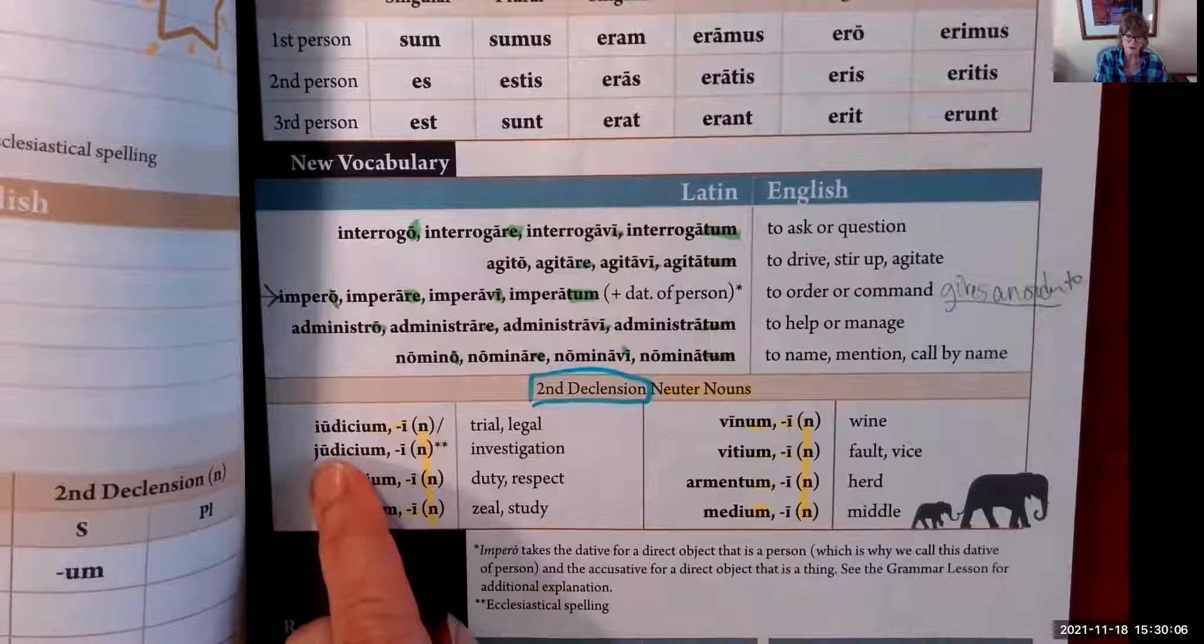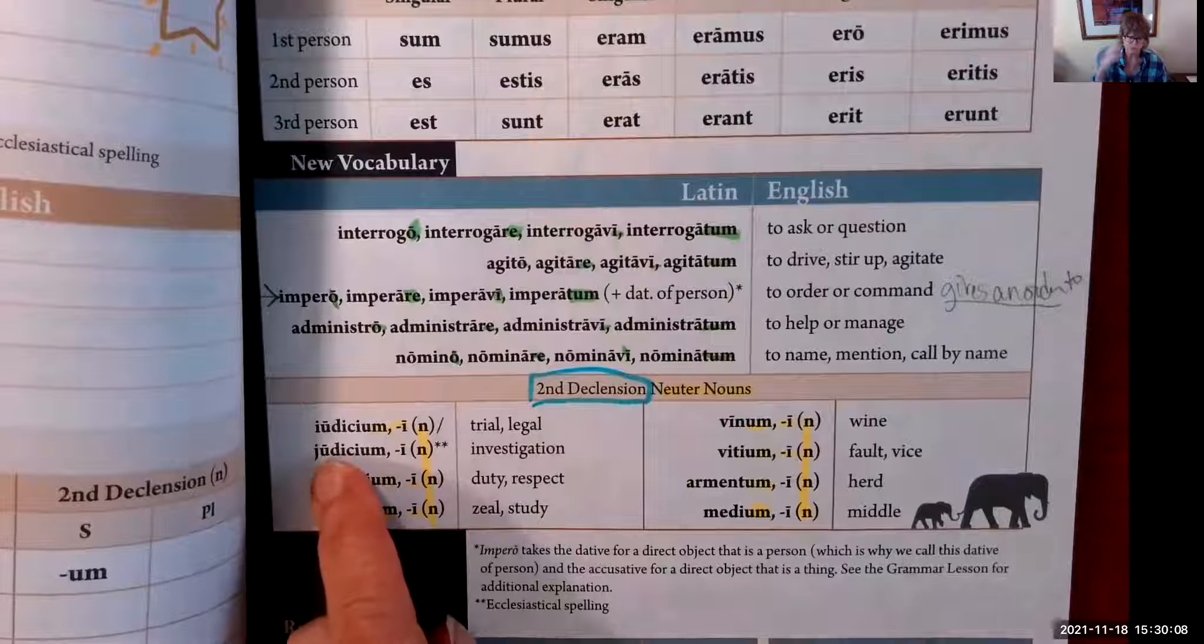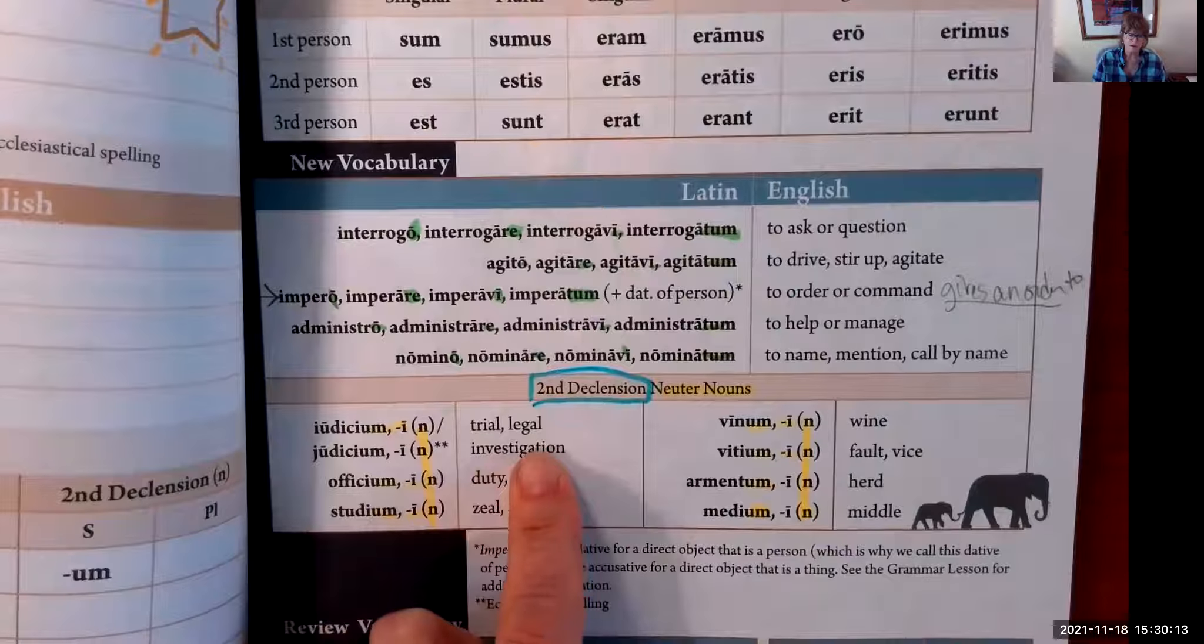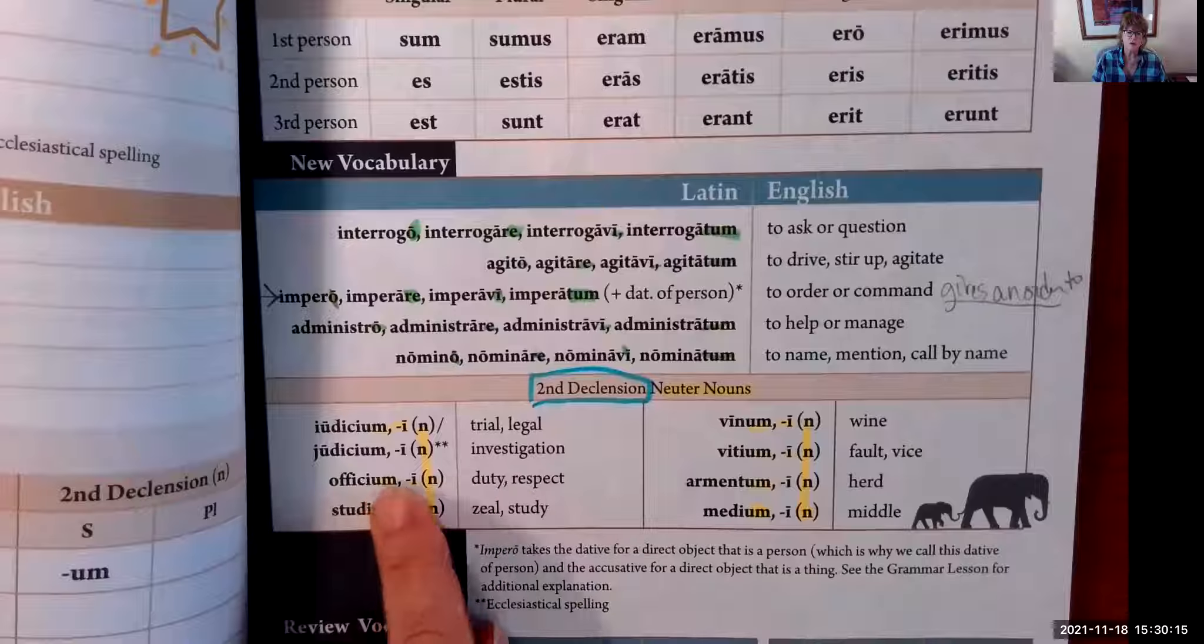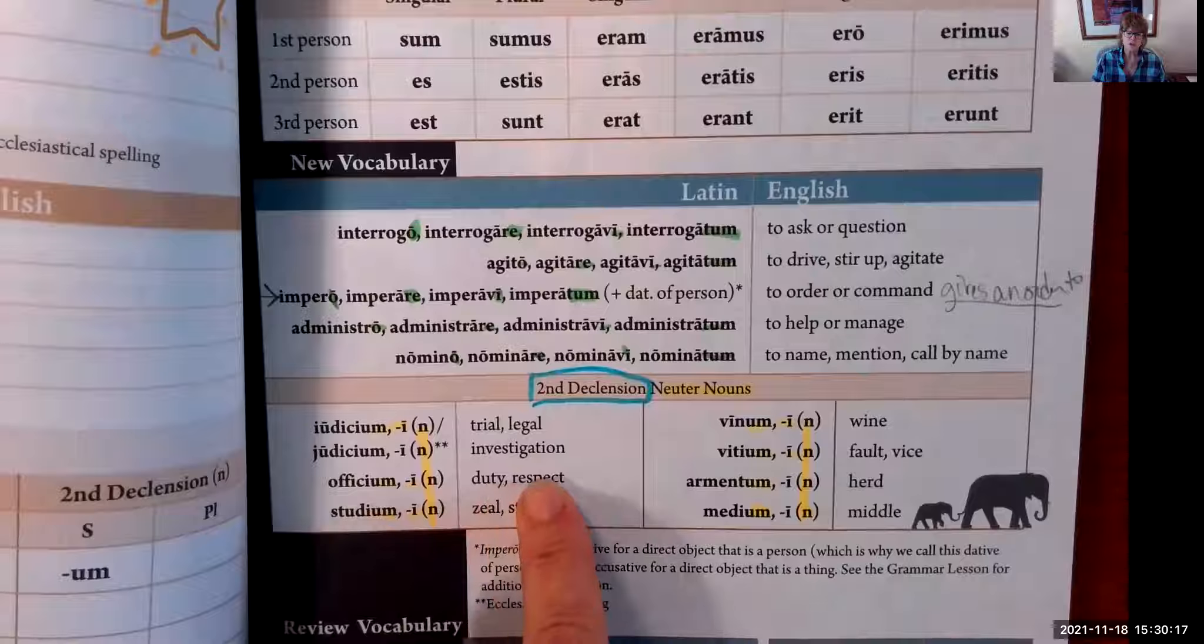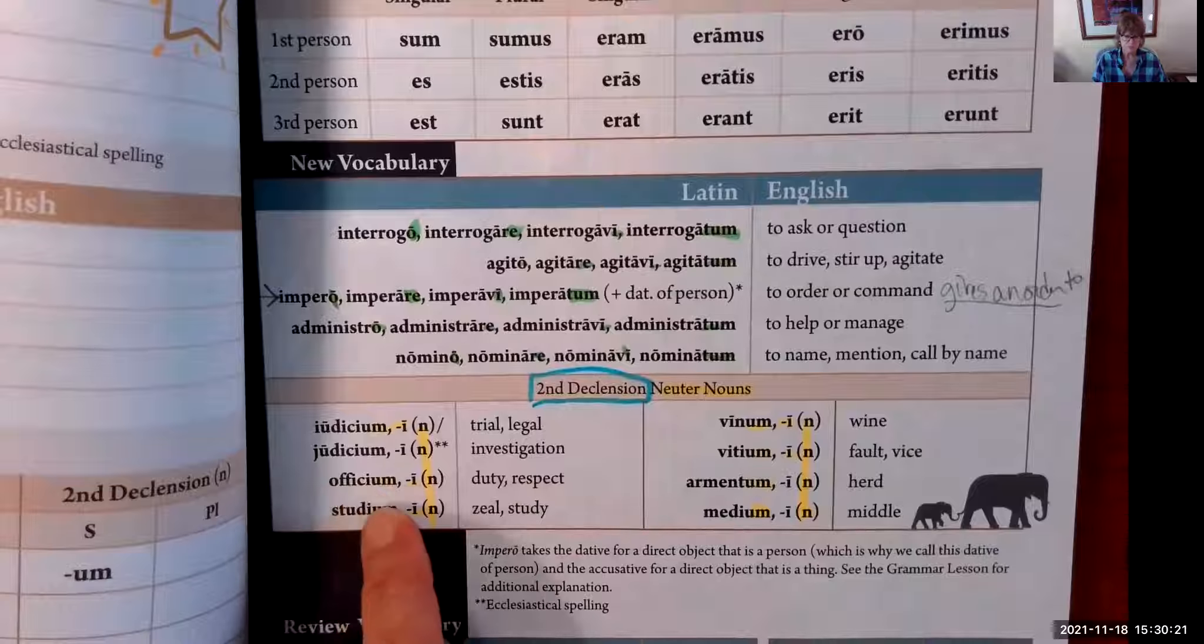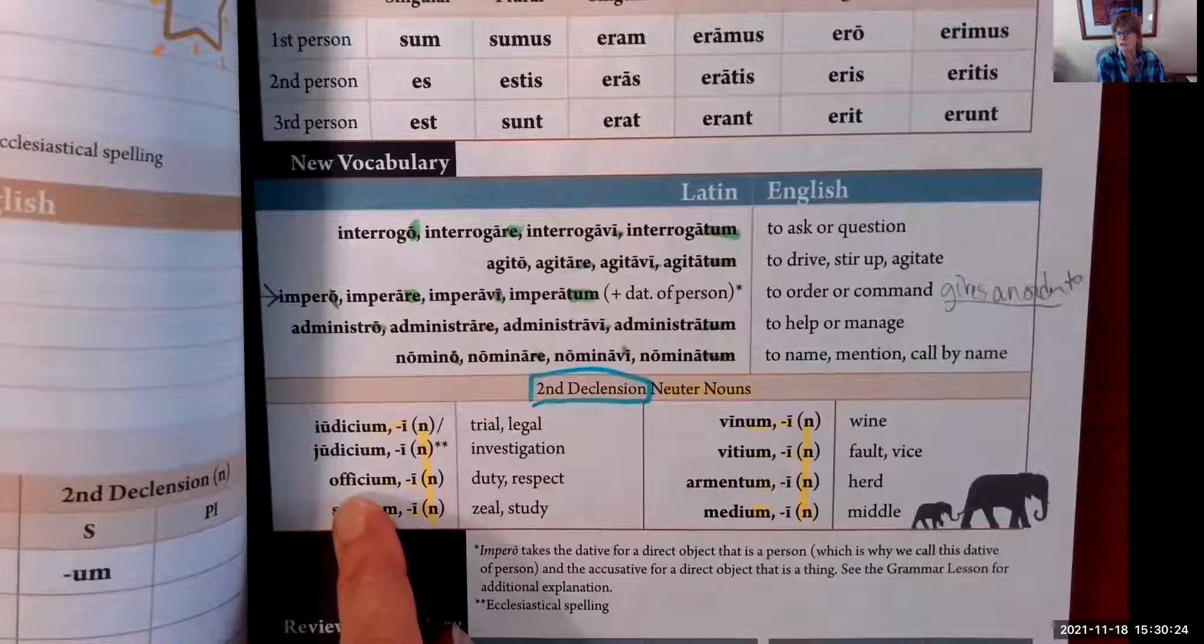It looks like 'justice' or 'judge.' Investigation is another way—legal investigation is where you can interpret that. Officium, officii—duty, respect. Looks like 'office.'